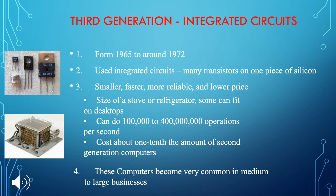As you can see, all devices can be made smaller and smaller because of ICs. It can do 100,000 to 400 million operations per second, and costs about one-tenth the amount of second generation computers. These computers became very common in medium to large businesses.